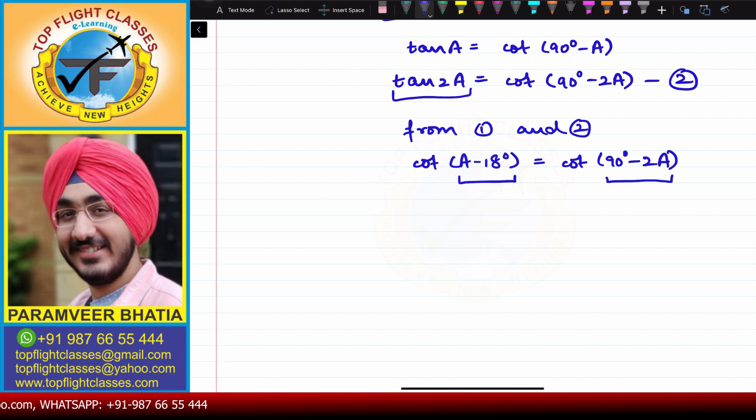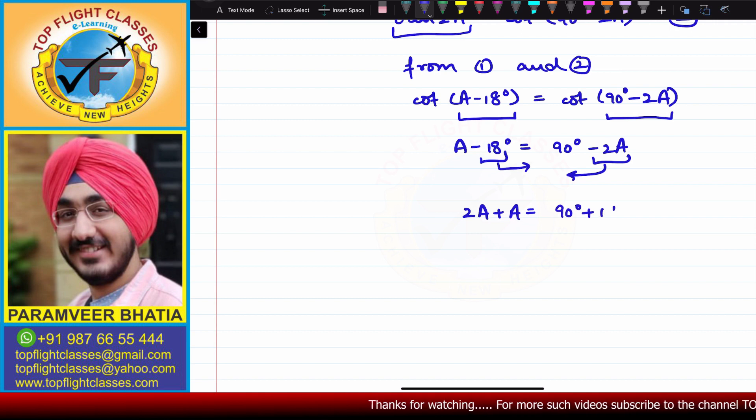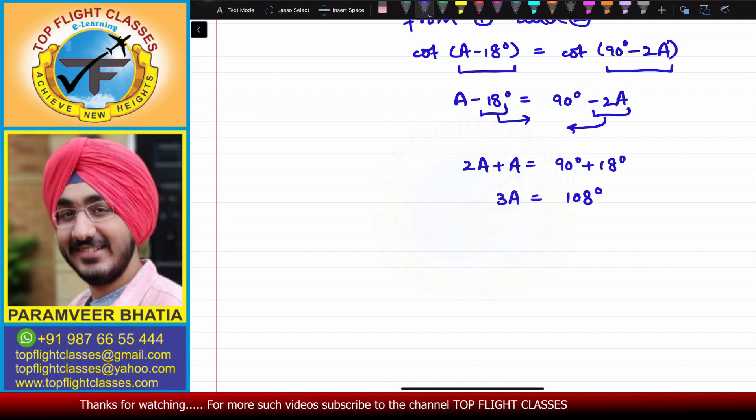So I will get A - 18° equals 90° - 2A. Here I will get 2A + A equals 90° + 18°, which gives 3A equals 108°. Since 3 times 36 is 108, from here I get that A is equal to 36 degrees.